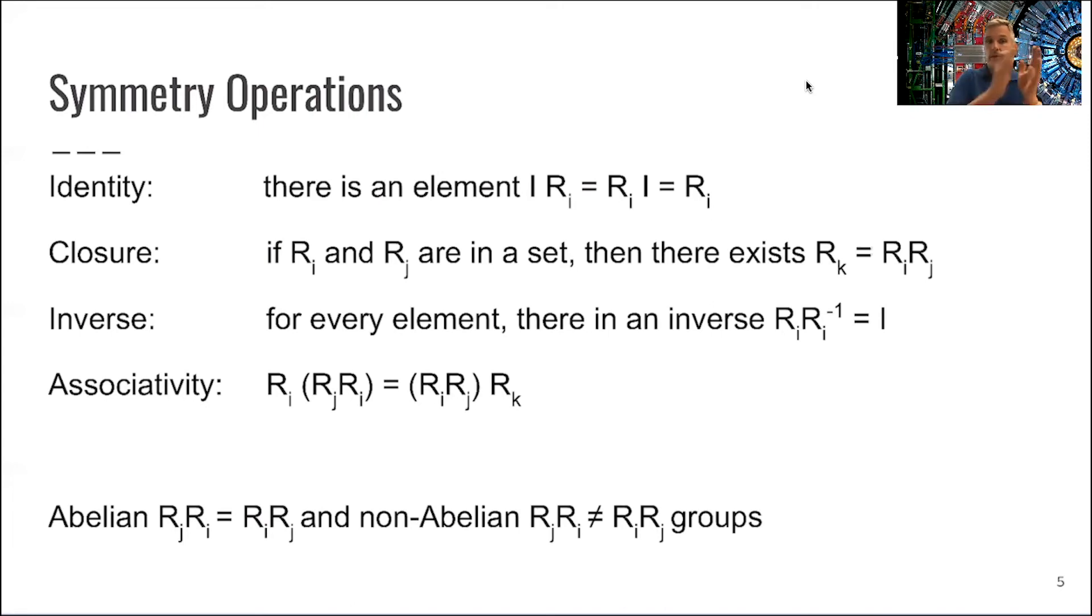If you have a rotation acting on two other rotations, you can regroup and follow what's shown in this equation here. It's not clear that you can revert the order of certain elements of your group or your symmetry operation. You can classify them, however: those where you can commute are called abelian groups and those where you cannot are non-abelian groups.